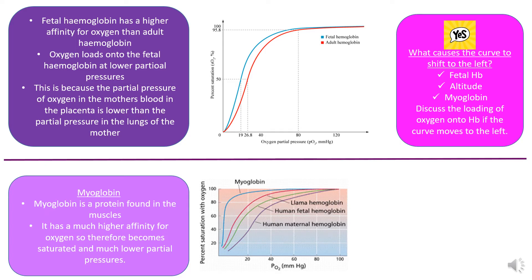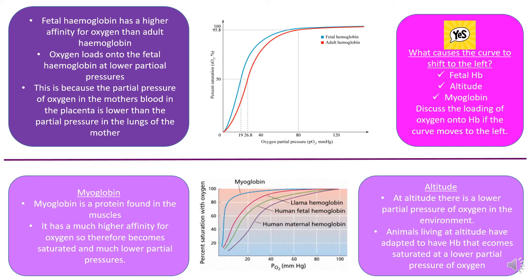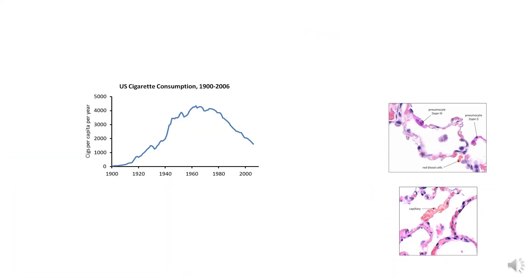Myoglobin is a protein found in the muscles and it has a really high affinity for oxygen. It's kind of like your muscles' plan B for oxygen. The myoglobin just hangs around there and mops up lots of oxygen. When your muscles are really desperate, the myoglobin will then give it up. At altitude, there's lower oxygen, low partial pressure of oxygen in the environment. Animals that live at altitude have adapted hemoglobin that becomes saturated at a lower partial pressure. There's also some populations of humans that have slightly different hemoglobin with higher affinity for oxygen at lower partial pressures.